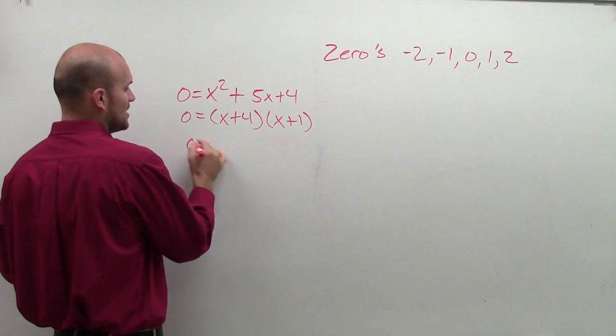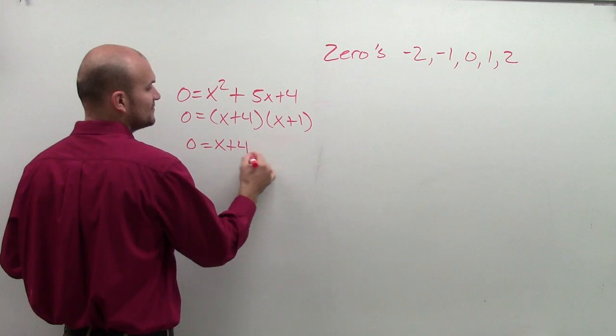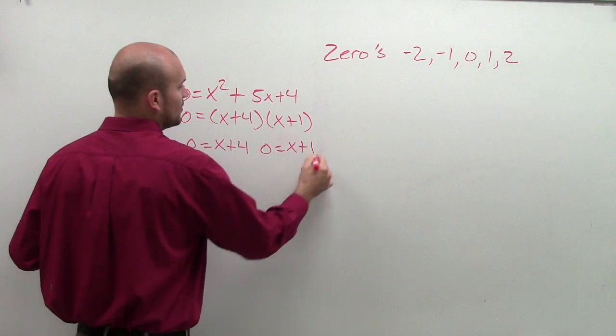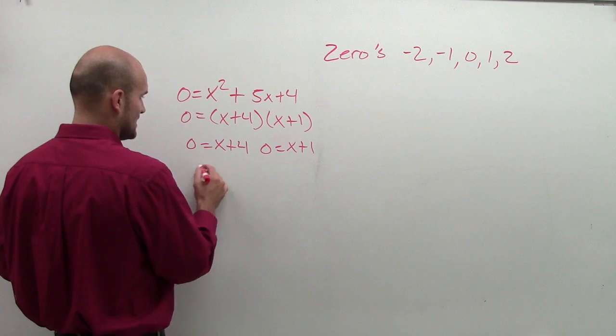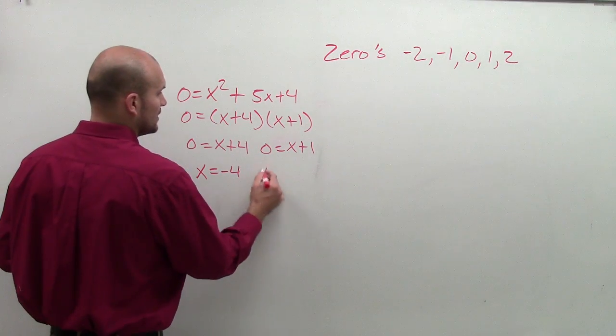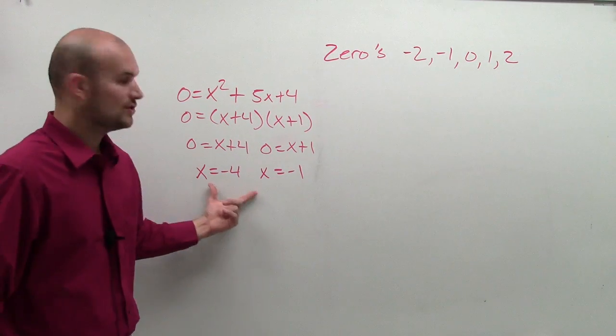So I say 0 equals x plus 4 times x plus 1. Then you use the zero product property. So you could say 0 equals x plus 4 and 0 equals x plus 1. Now we solve for our zeros. And you could say x equals negative 4 and x equals negative 1. So those are your zeros.